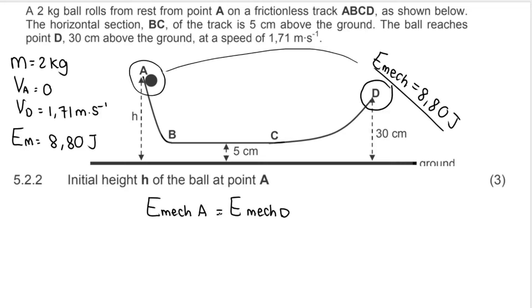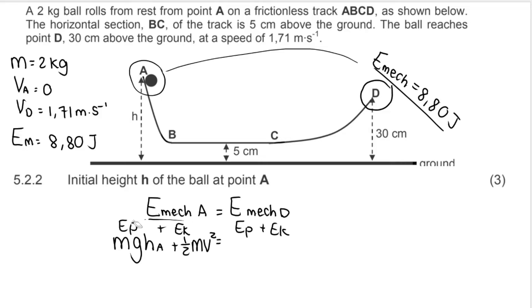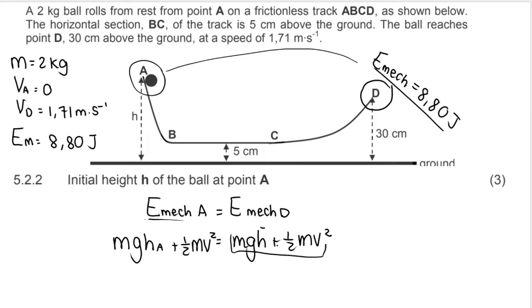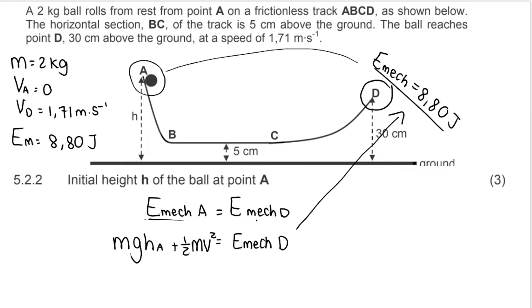We write: E_M(A) = E_M(D). We already know E_M(D) = 8.80 J. For the left side, mechanical energy equals potential plus kinetic, so: mgh_A + ½mv²_A = E_M(D). I don't need to re-expand the right side because I already know E_M(D) — I just substitute 8.80 J for it directly.